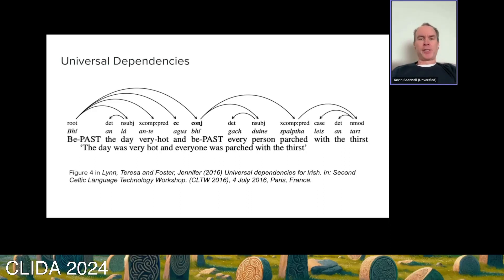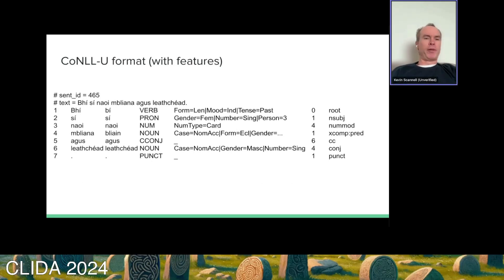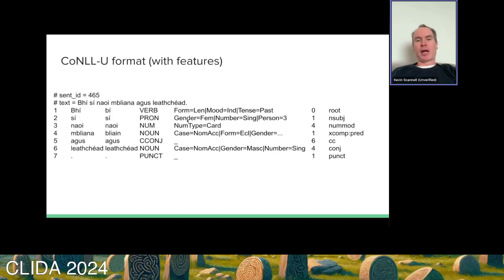What I ended up doing was to turn to the Universal Dependencies Treebank, originally created by Teresa Lynn for Irish. It's a multilingual framework for doing dependency parsing in many languages in a language-independent way. This is an example sentence from one of Teresa and Jennifer Foster's papers. In the Universal Dependencies parse format, the first column is the surface token, then a lemma, part-of-speech tag, and then key-value pairs which are features — tenses, number, person, gender for nouns, et cetera. The form or the mutation is also one of those features.